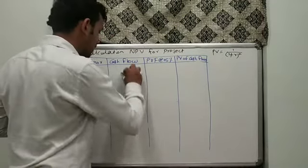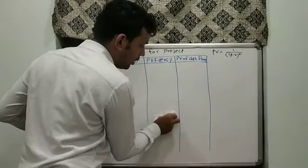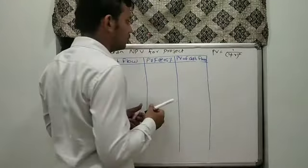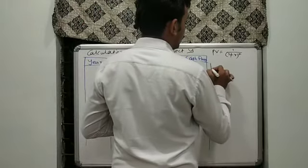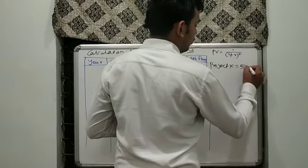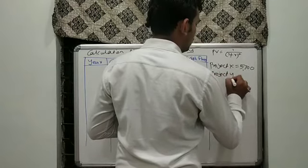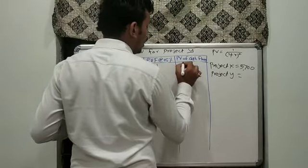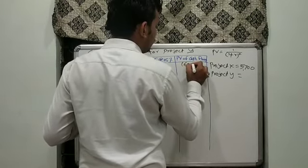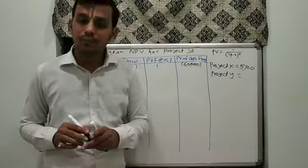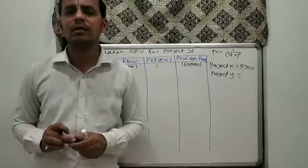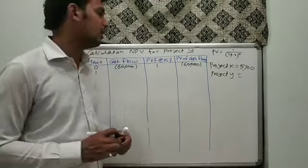For Project Y, at Year 0 the investment was 60,000. At PV factor of 1, the present value cash outflow is 60,000, shown in brackets. Moving to Year 1: the project has a life of 7 years with a standard cash inflow of 16,000 per year. The PV factor for Year 1 at 15% is 0.870, so 16,000 multiplied by 0.870 equals 13,920. For Year 2, cash inflow is 16,000; PV factor is 0.756, giving 12,096.